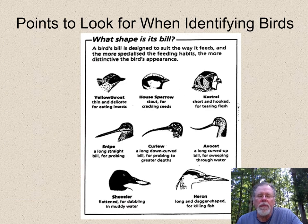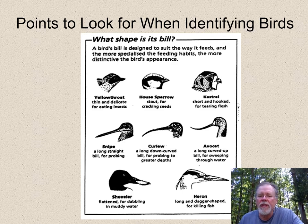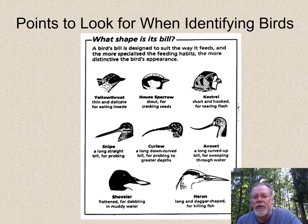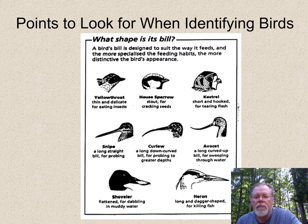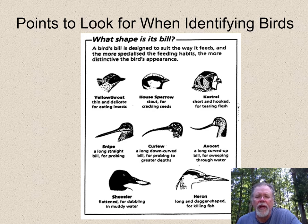We can also look at bills. Bills tell us a lot about their lifestyle. If it's a really stout bill like you see on the house sparrow at the top, it's probably a seed eater. If it's a hooked bill that you see in hawks and falcons and eagles, like the kestrel in the upper right, you can pretty much guess it's a raptor that tears apart its food — usually meat. If it's got a very long straight bill or a slightly curved one, you can bet it's probably probing mud flats or sandy beaches, like the snipe you see on the left-hand side. And then of course we have the shoveler, which is a duck, and the heron, which is going to spear fish.